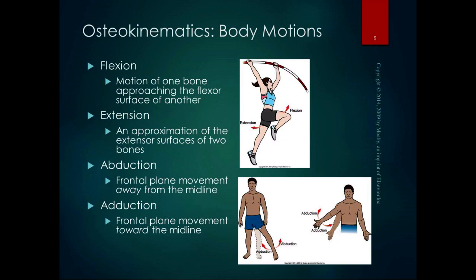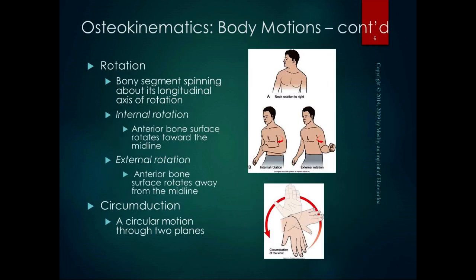Rotation is a bony segment spinning about its longitudinal axis of rotation. Internal and external rotation usually refer to the extremities; when discussing the trunk or axial skeleton, the term is simply 'rotation.' With internal rotation, the anterior bone surface rotates toward the midline; with external rotation, the anterior bone surface rotates away from the midline.